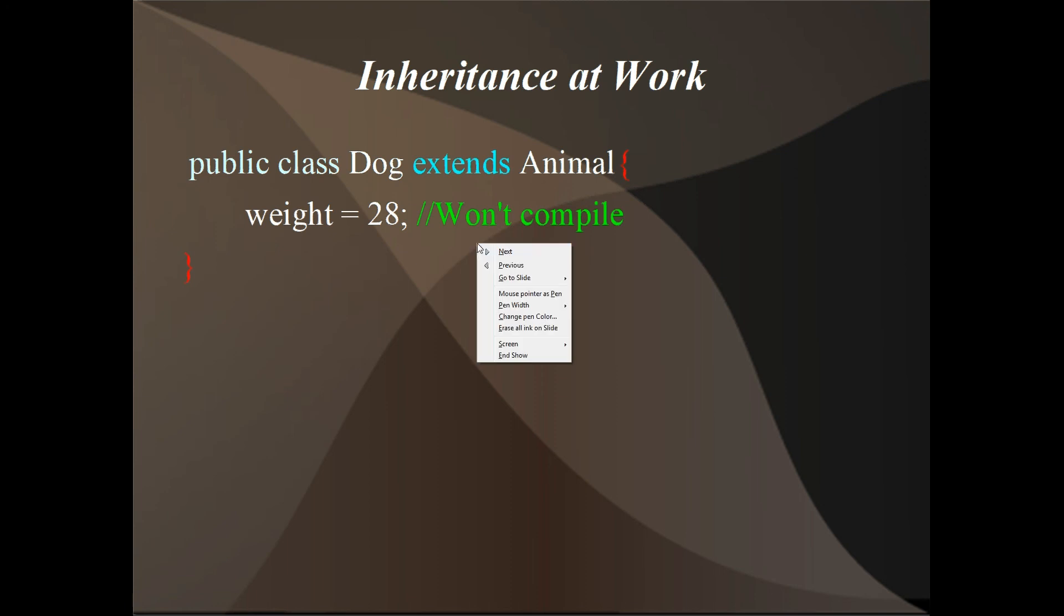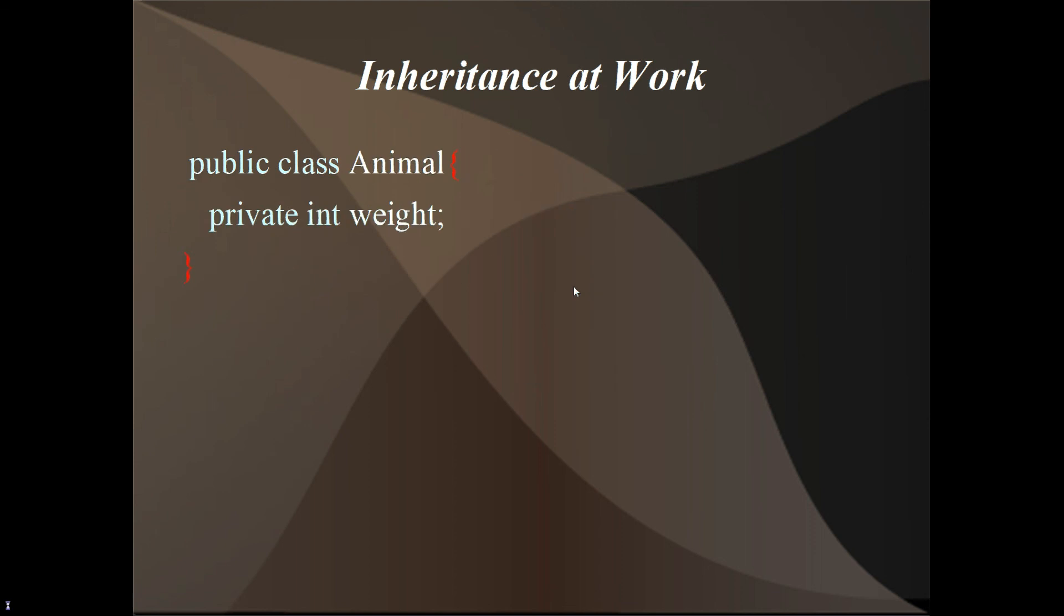But let's say we go back here. Let's say this was a public int. Well, this would compile because it inherits the weight method. But another way to work around this is if we come back to our animal class, and we add a set weight method for the weight variable. So basically what that means is now we can call the set weight method. It's kind of like the dog class has the weight variable itself. But we can only change it using the set weight method now.